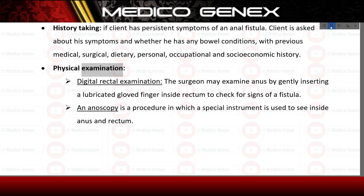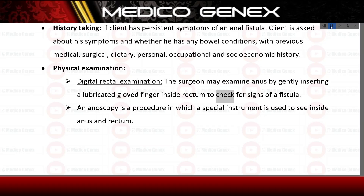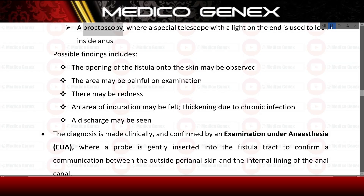Physical examination. Digital rectal examination — the surgeon may examine the anus by gently inserting a lubricated gloved finger inside the rectum to check for signs of a fistula. An anoscopy is a procedure in which a special instrument is used to see inside the anus and rectum. A proctoscopy is where a special telescope with a light on the end is used to look inside the anus.